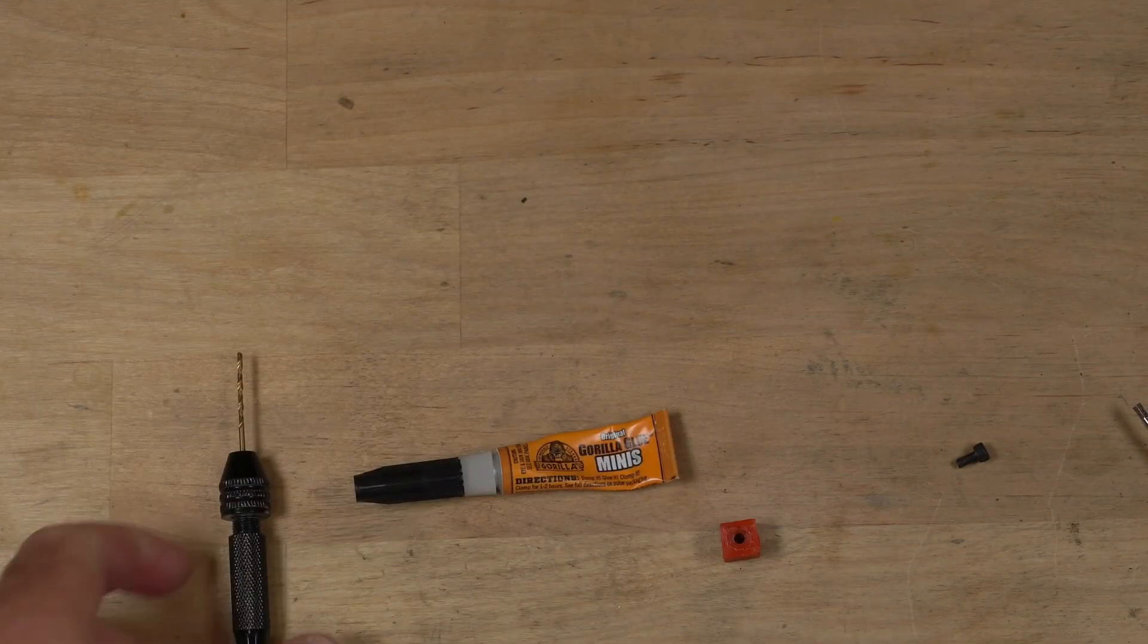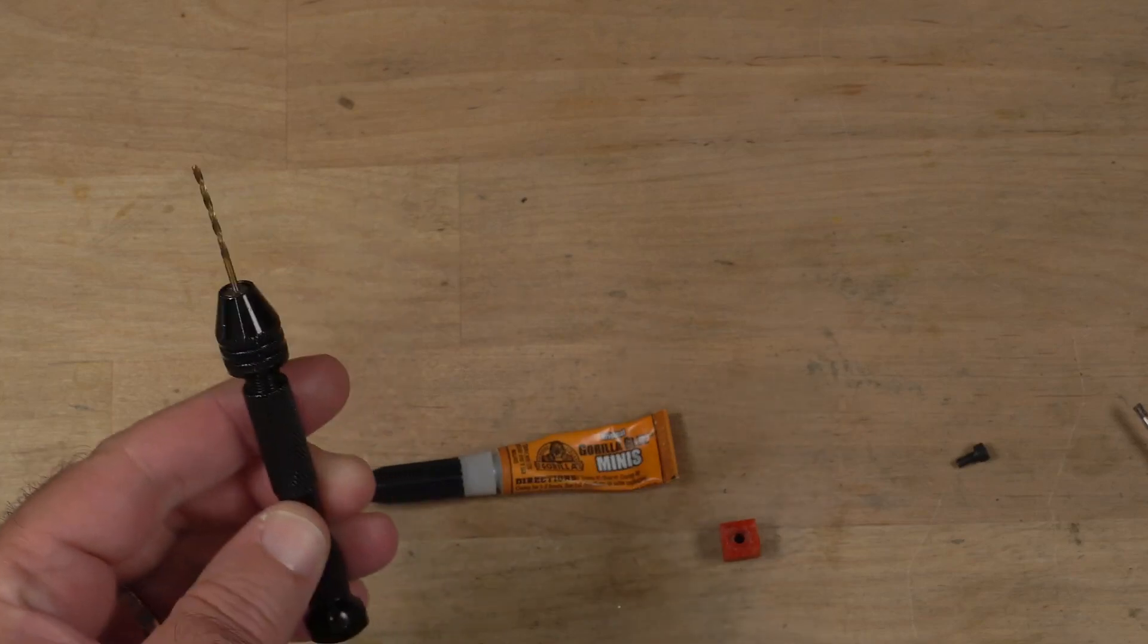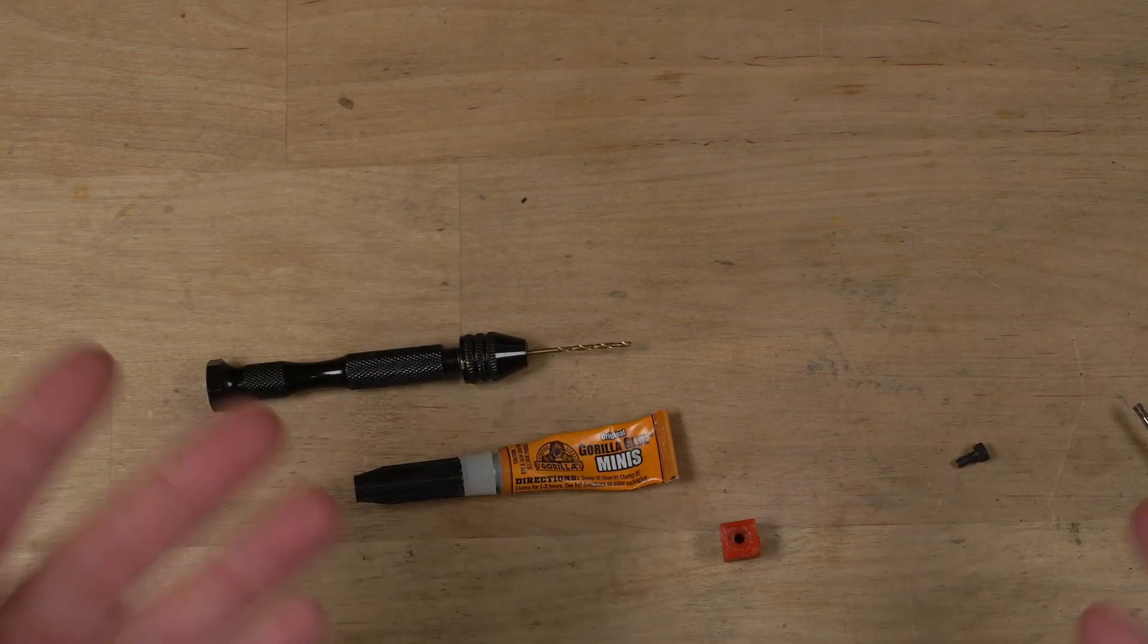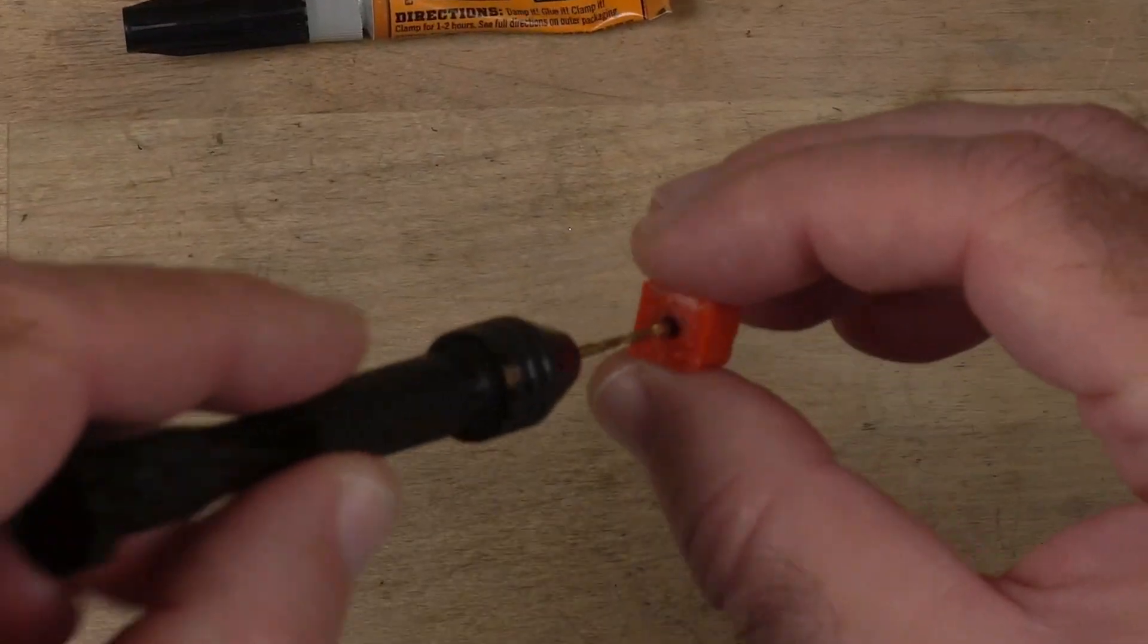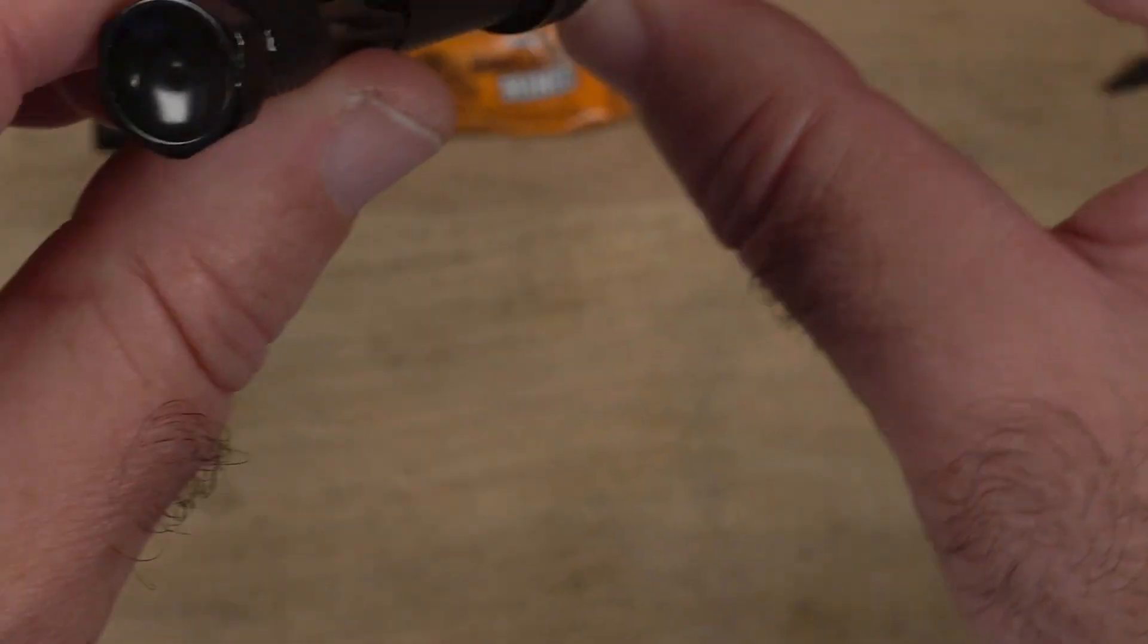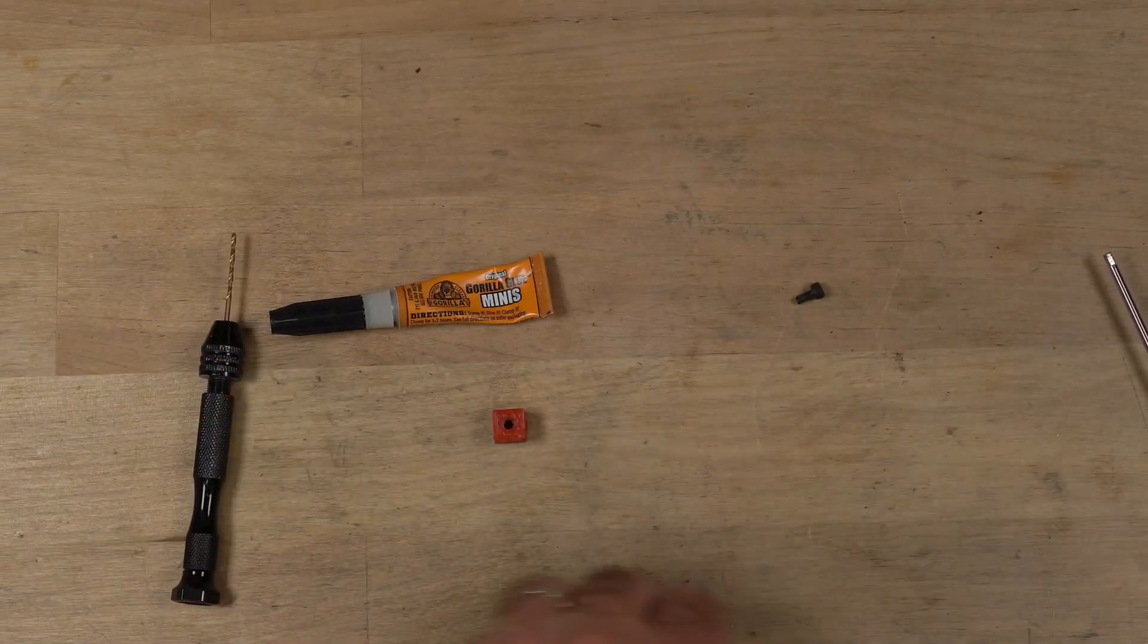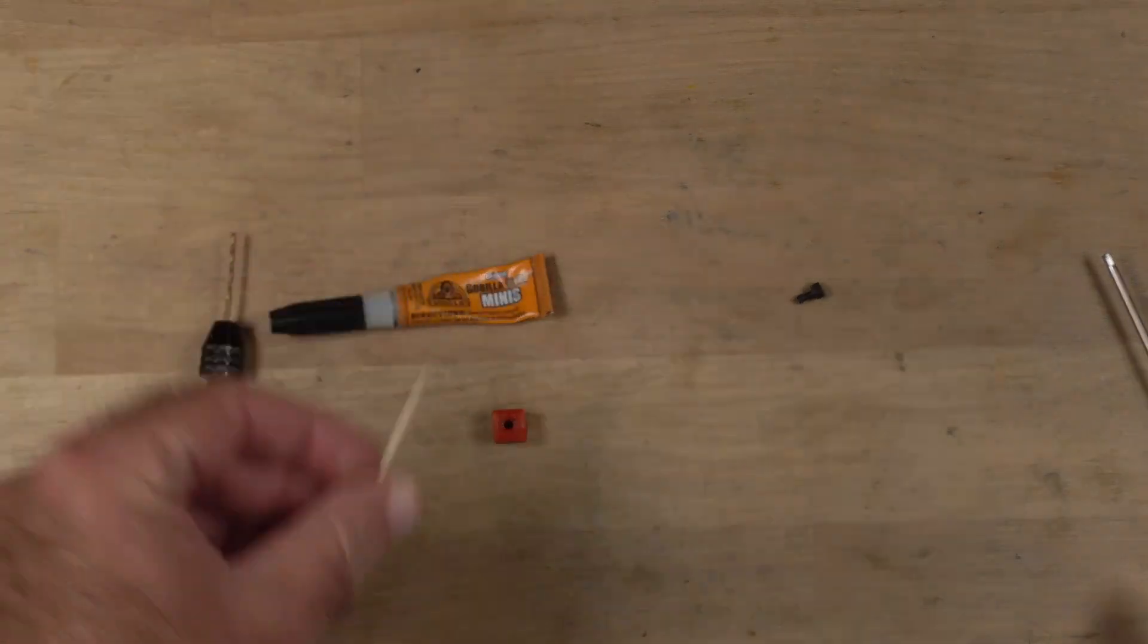I use Gorilla Glue to do that. You're also going to need a 1/16th drill bit or whatever size works for the hole that you're in. I have lots of room to move inside of there. And you're going to need a toothpick. Let's get started.